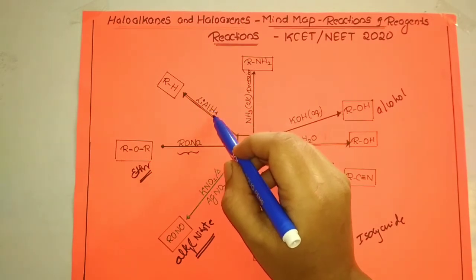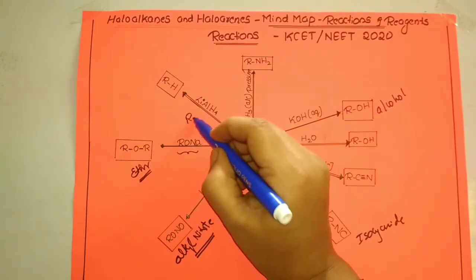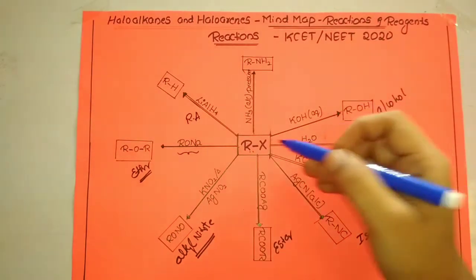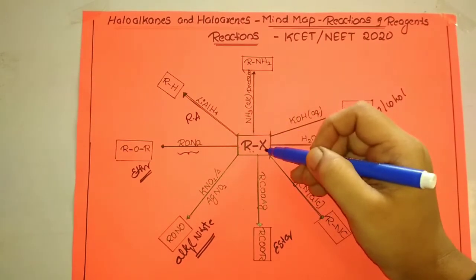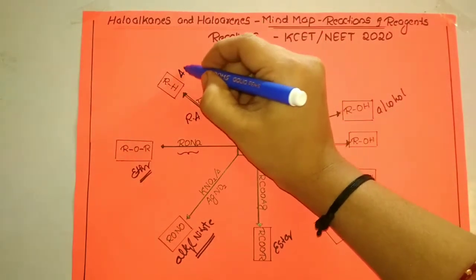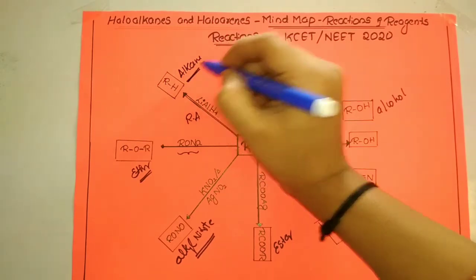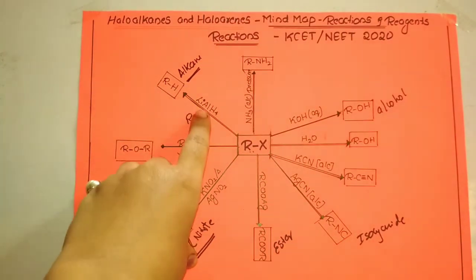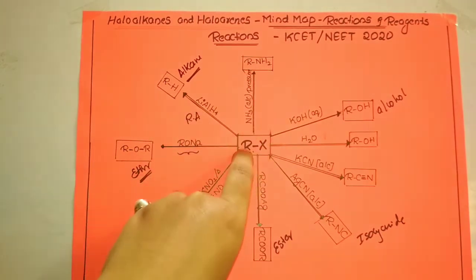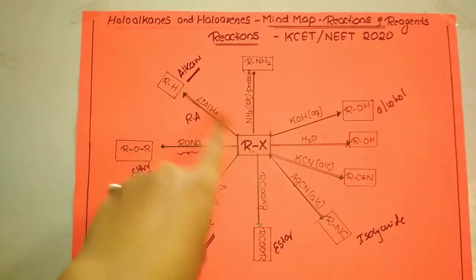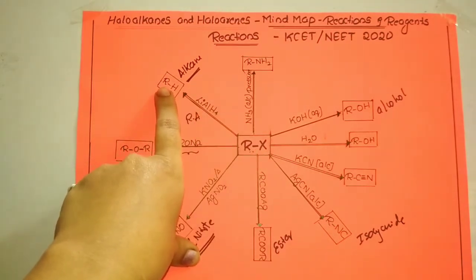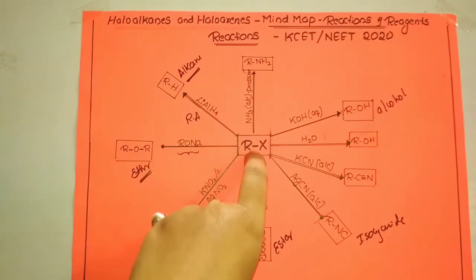When alkyl halide is treated with lithium aluminium hydride (LiAlH4), which is a strong reducing agent, it results in the formation of the respective alkane. The reducing agent adds hydrogen to the R group to give the corresponding alkane.